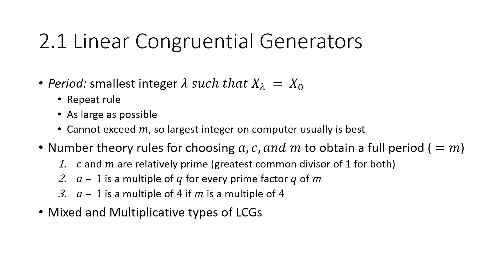So we're looking for the largest integer that your computer can store, whether it's 32 bit or 64 bit, in order to generate this period so it's large enough. There are number theory rules for choosing all of our parameters A, C, and M primarily to obtain a full period. They have to be relatively prime, meaning between both of them the common divisor must be one. And then A minus one is a multiple of Q, which is the prime factor of M. And then A minus one is a multiple of four if M is a multiple of four.